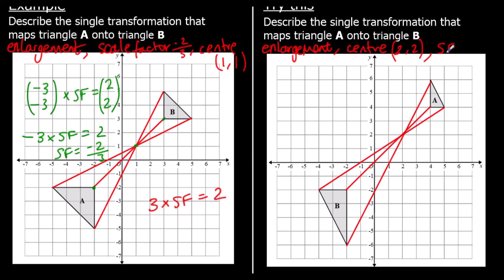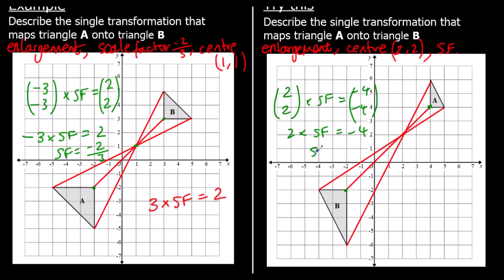And then the scale factor. If I look at the green point on A and B: to get there from the centre was right 2, up 2 — so the vector (2, 2) times the scale factor. That became (-4, -4). So 2 times the scale factor equals negative 4; halving both sides, the scale factor is negative 2.